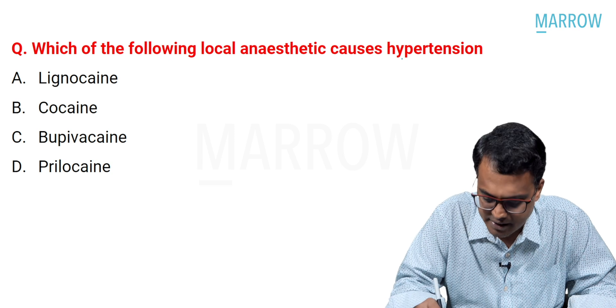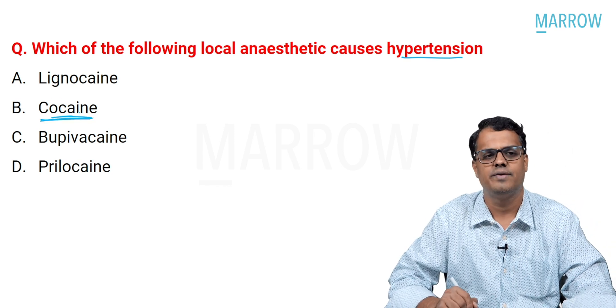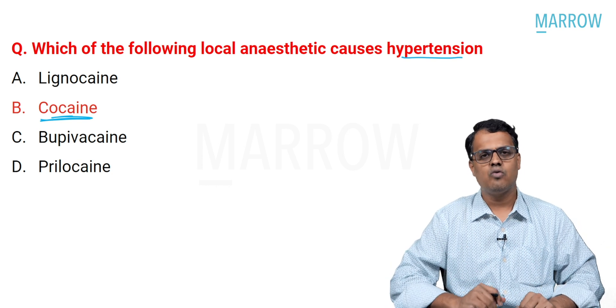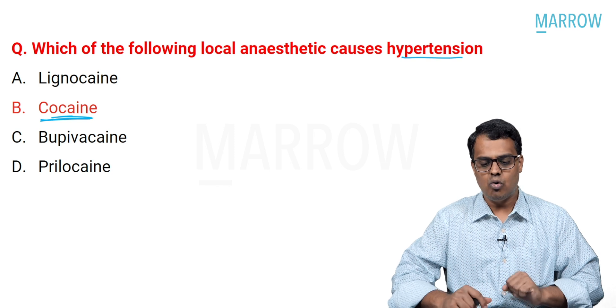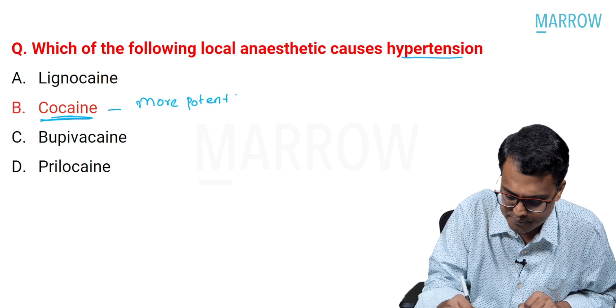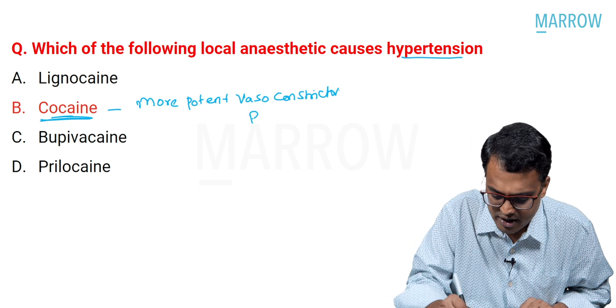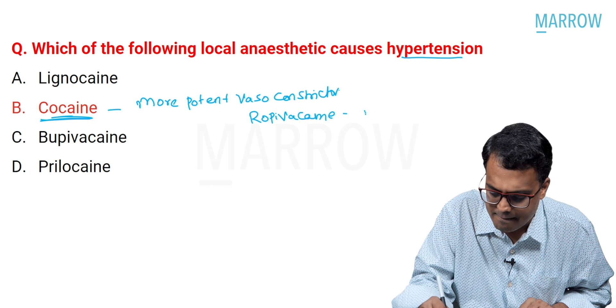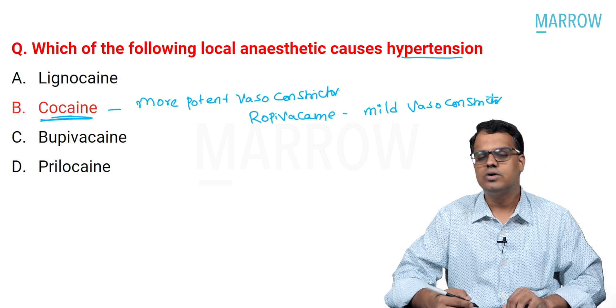The next question: which of the following local anesthetics causes hypertension? All local anesthetics are vasodilators except cocaine — it's almost a straightforward MCQ. When a patient has taken a lot of cocaine, they will present with hypertension, tachycardia, and coronary vasospasm. Cocaine is a more potent vasoconstrictor. Among newer agents, ropivacaine has mild vasoconstrictor property. Cocaine should not be given intravenously. This was the straightforward question asked in your entrance examination.